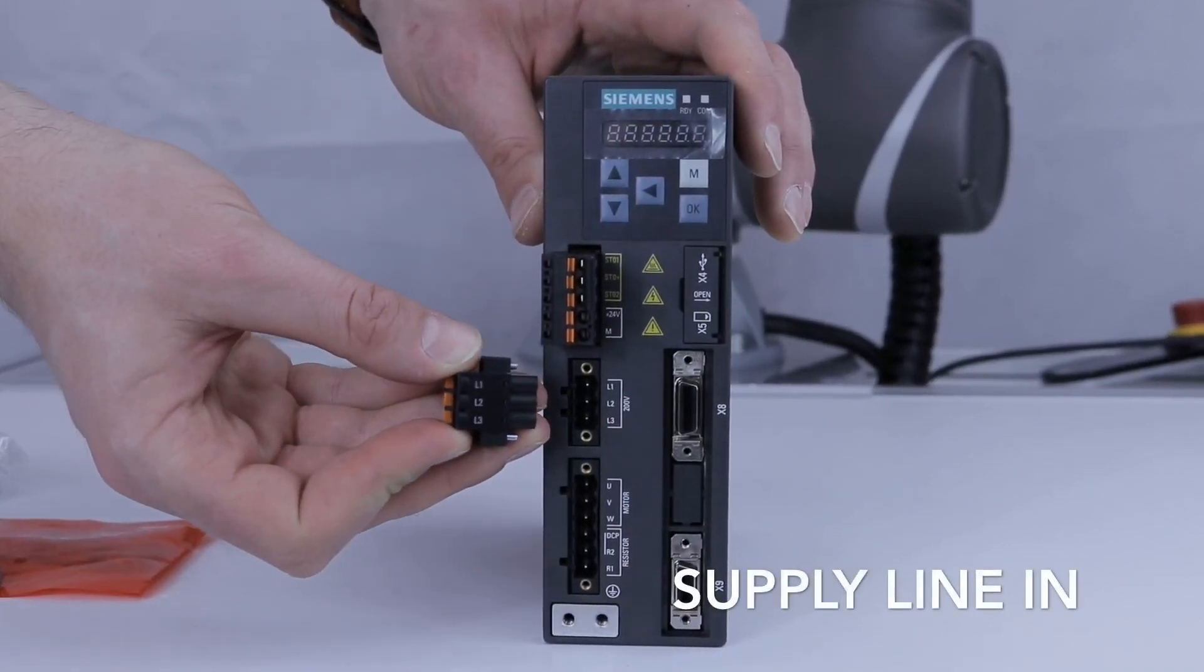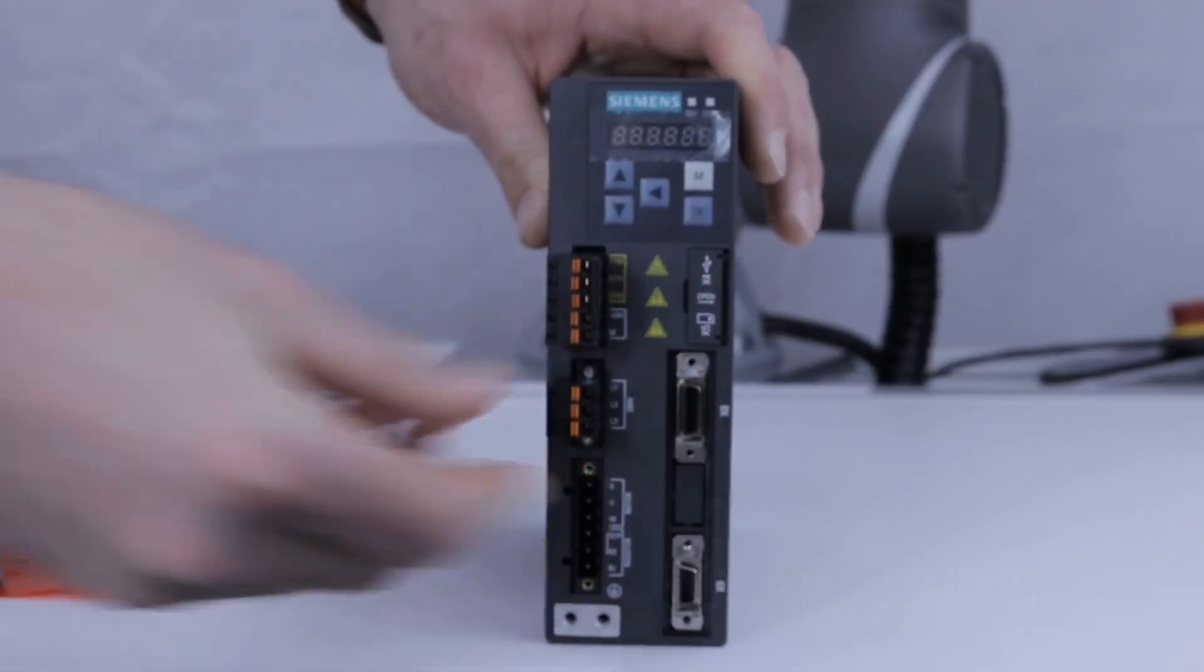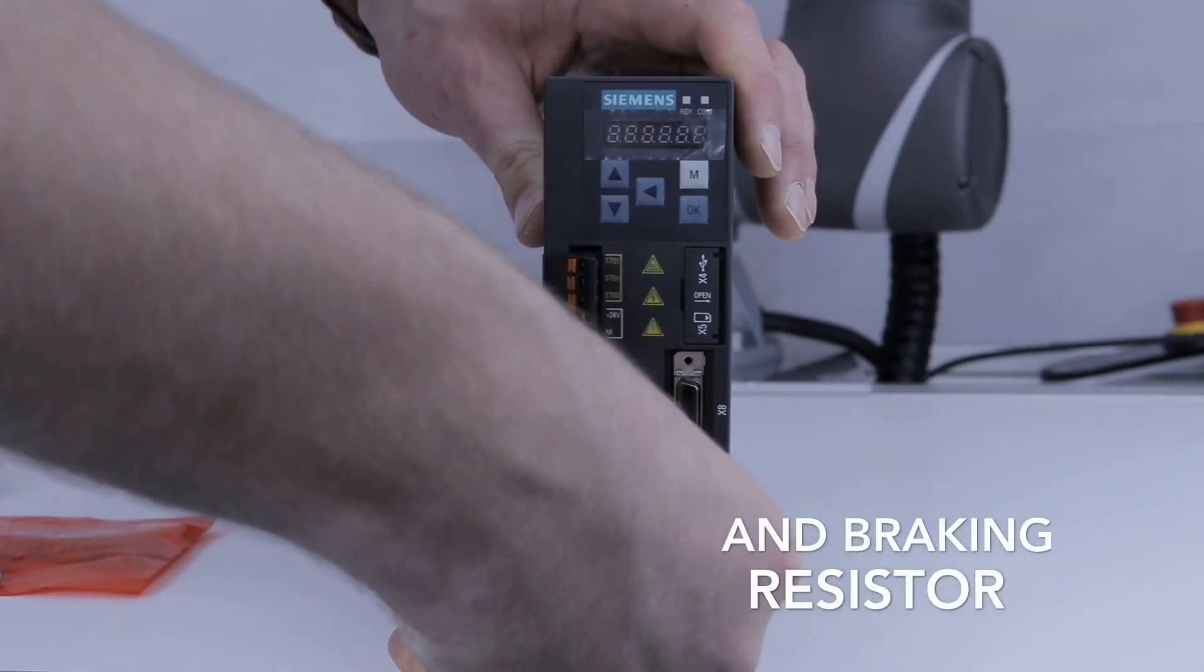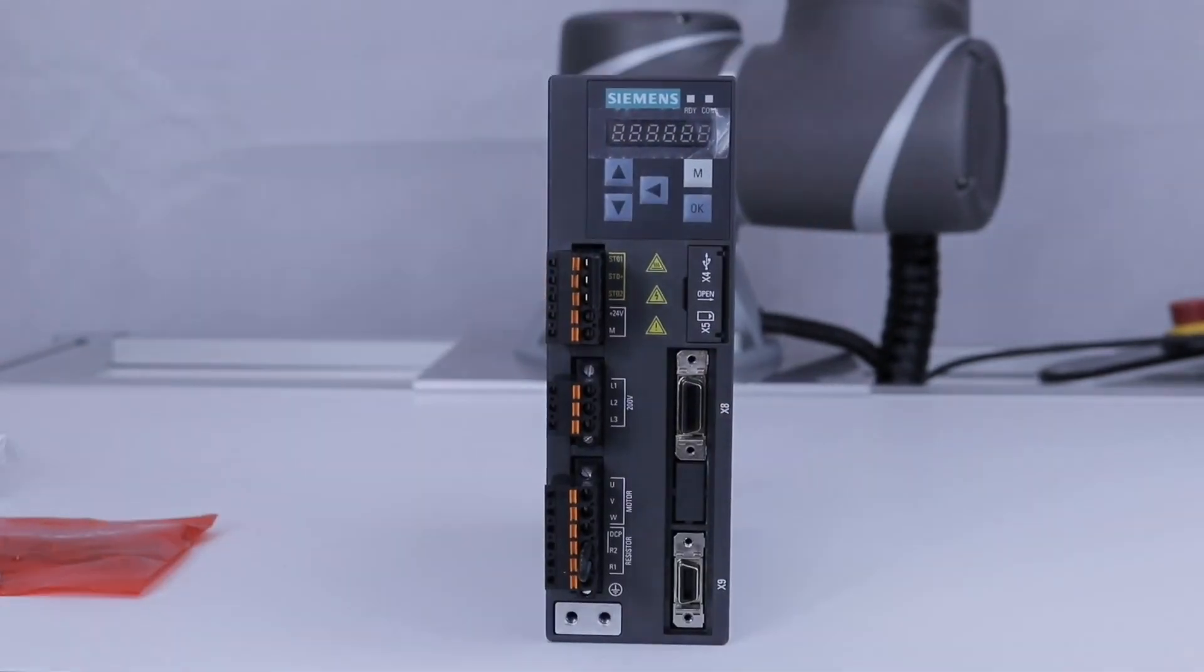The supply line in is where the mains voltage is connected. The motor line out and external braking resistor is where the orange motor power cable is connected and where any external braking resistor, if applicable, is connected.